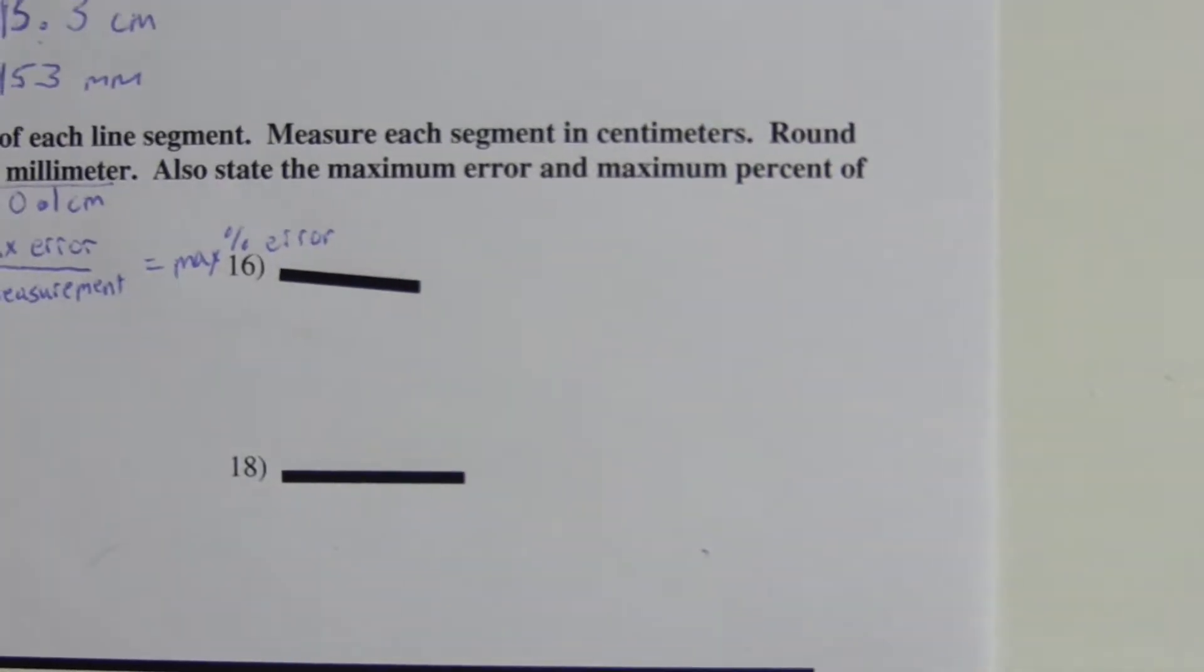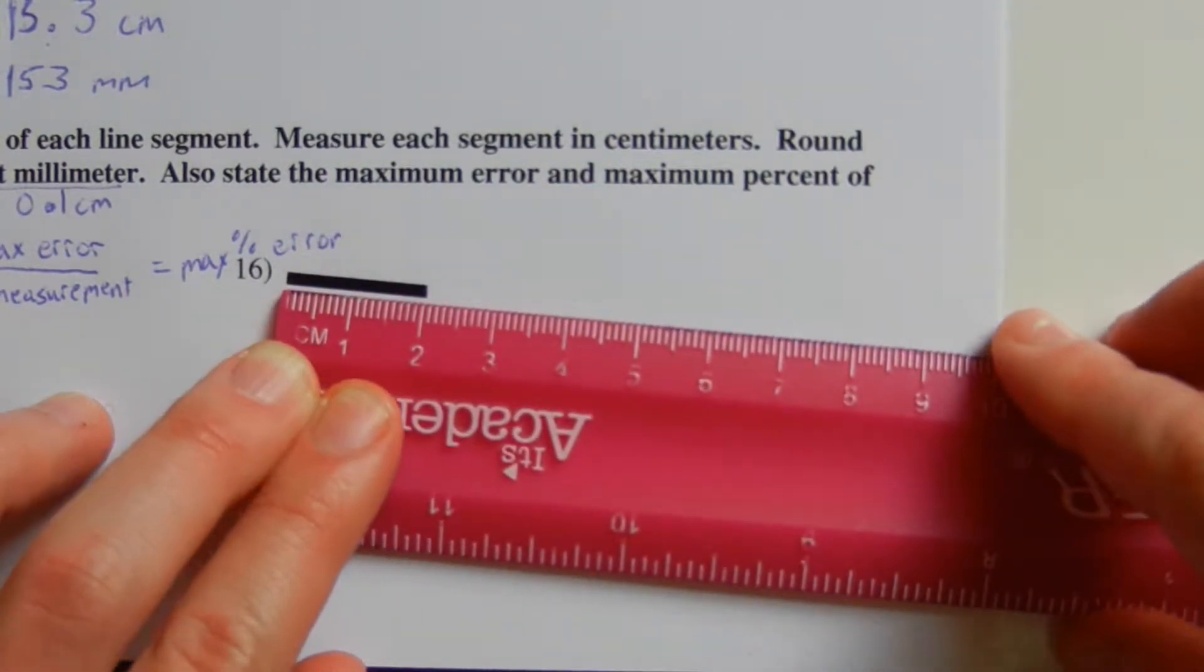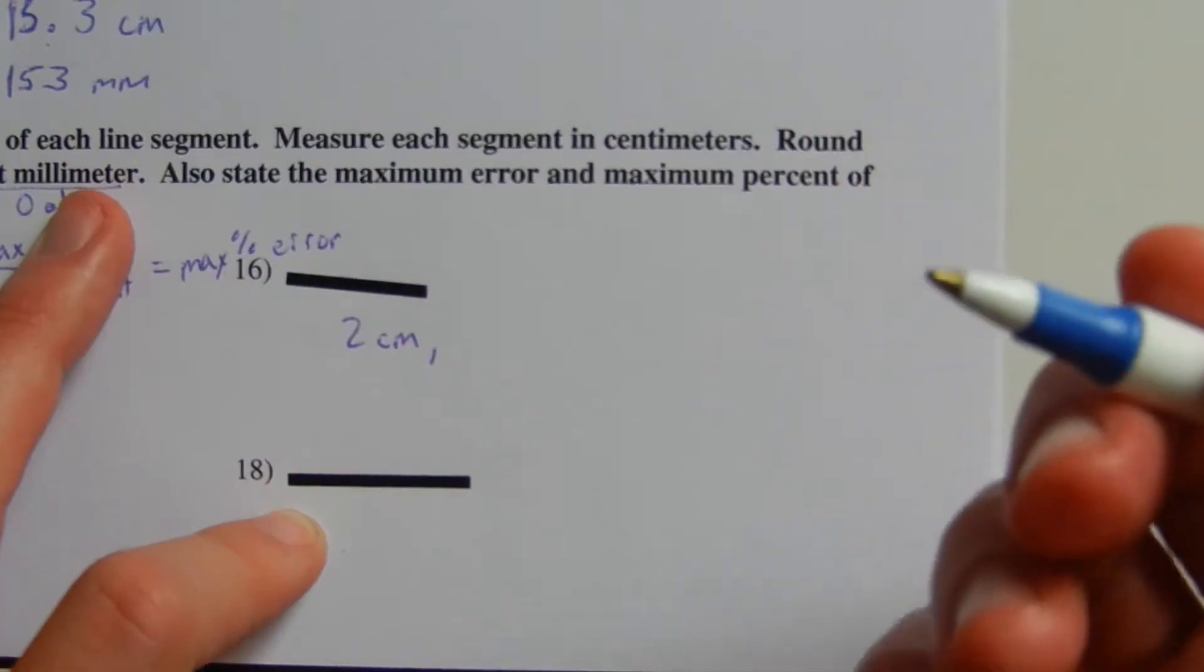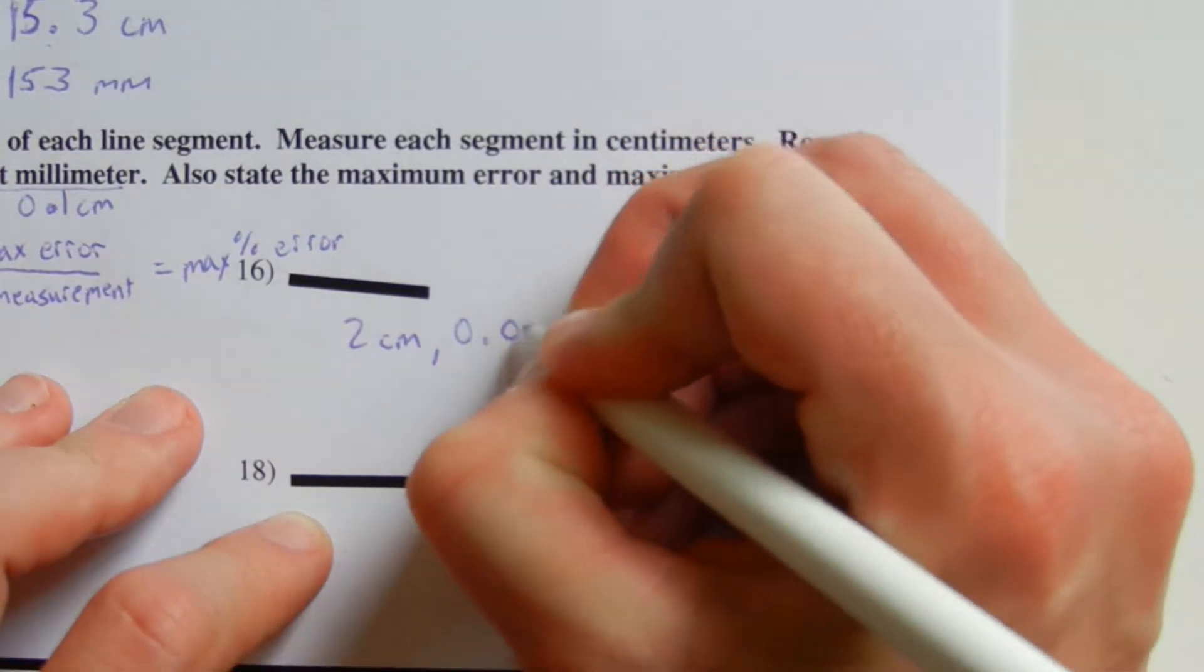Now let's move on to number 16. When we measure 16, we get 2 centimeters exactly. We're still measuring to the nearest millimeter, so our max error is 0.05 centimeters.